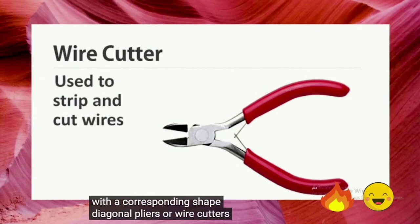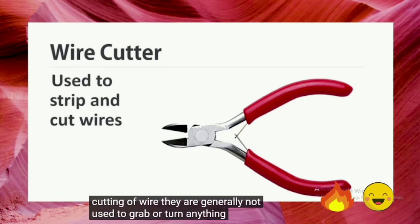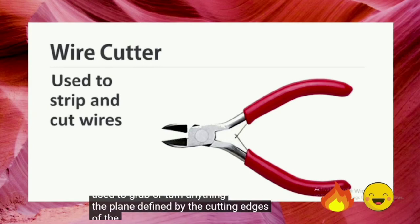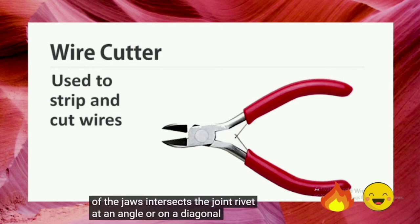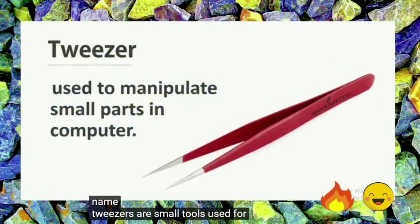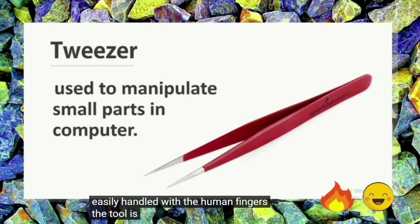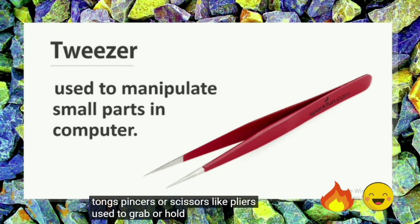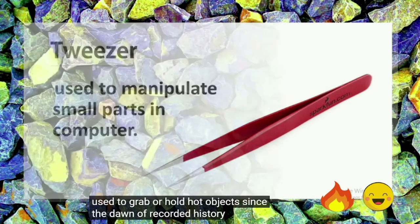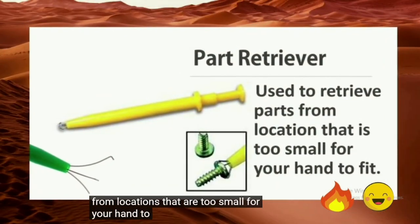Diagonal pliers, also called wire cutters or diagonal cutting pliers, are intended for cutting wire and are generally not used to grab or turn anything. The cutting edges intercept the joint rivet at a diagonal, hence the name. Tweezers are small tools used for picking up objects too small to be easily handled with human fingers, derived from tongs or pincers. A part retriever is used to retrieve parts from locations too small for your hand to fit.